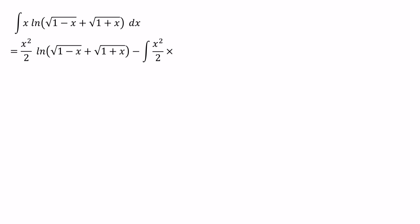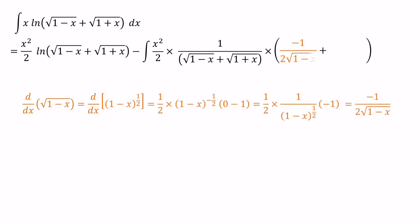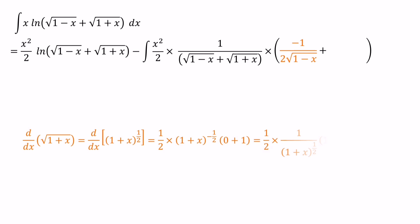The differentiation of the ln value we can write as 1 over (√(1-x) + √(1+x)). The differentiation of √(1-x) we can write as minus 1 over (2√(1-x)), plus the differentiation of √(1+x), which is 1 over (2√(1+x)).